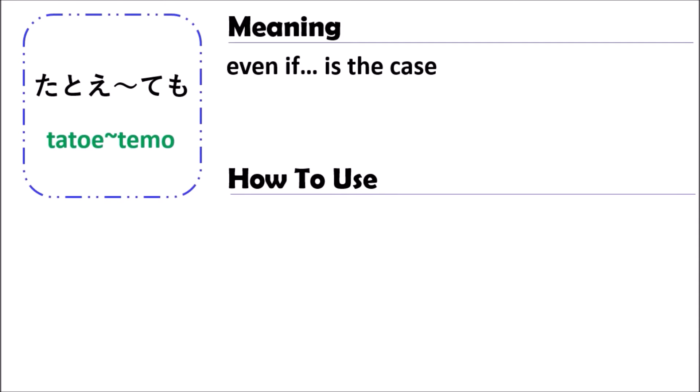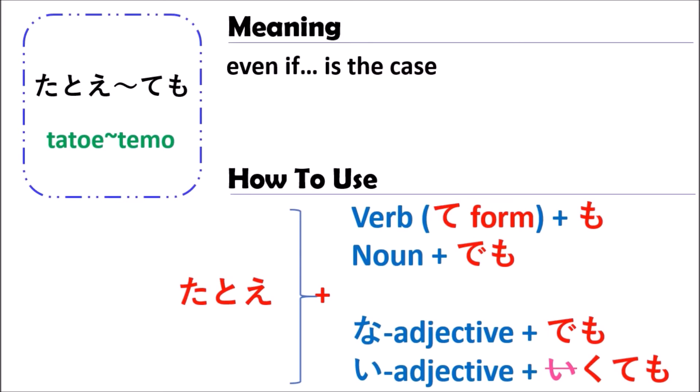So how to use? In Japanese, when you use the grammar of たとい何々でも, you can use the verb, the noun, and the adjective — na-adjective and i-adjective — as you see here.